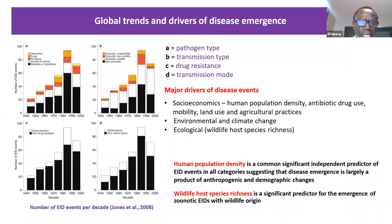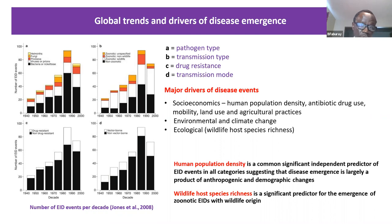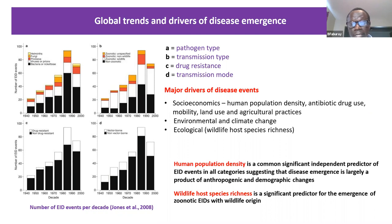Looking at global trends in EID events, data from Jones et al. shows the contribution of different pathogen groups — viruses, bacteria — and transmission types, including zoonotic and wildlife sources, which are very significant. It's believed SARS-CoV-2 originated from the Wuhan wet market, where live animals are sold and people eat various kinds of wildlife. Vector-borne diseases will become increasingly important because of climate change — as time goes on, attention will shift back to those diseases.